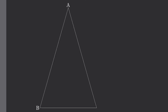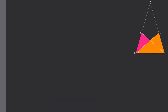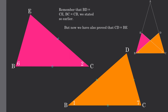Let's look back at our original triangle ABC with angle bisectors of equal lengths. Recall triangle BCD and triangle CBE. Let's take these triangles apart and look at them separately, labeling them correctly. Remember that line BD equals line CE and that line BC equals CB. But now we've also proven that line CD equals line BE. So by side-side-side congruency, triangle CBE is congruent to triangle BCD, meaning that angle 6 equals angle 7.